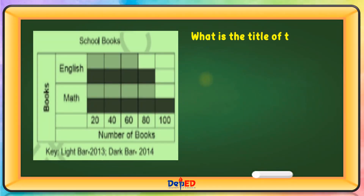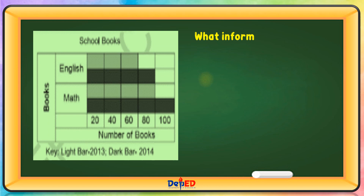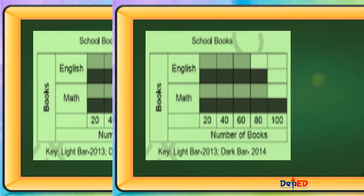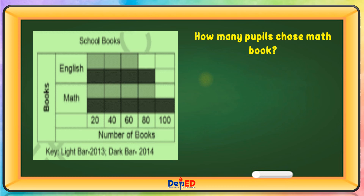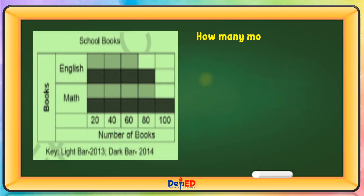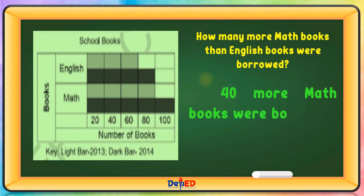What is the title of the double horizontal bar graph? The title of the graph is School Books. What information is found in the horizontal axis? The information found in the horizontal axis is number of books. How many pupils chose math book? A total of 180 pupils chose math book. How many more math books than English books were borrowed? 40 more math books were borrowed than English books.